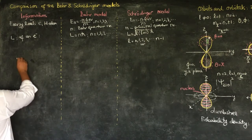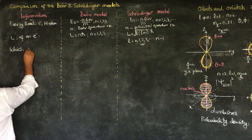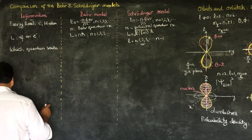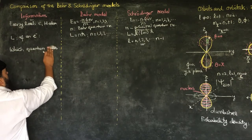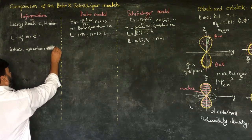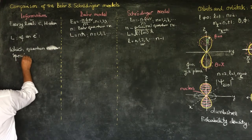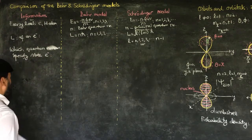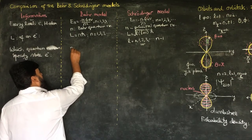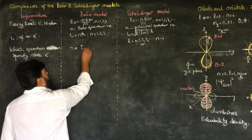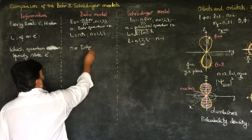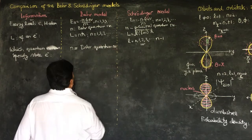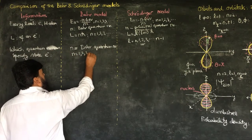If I ask which quantum numbers specify a quantum state of an electron, the Bohr model says that only the Bohr quantum number n specifies a given quantum state, where n equals 1, 2, 3 and so on.